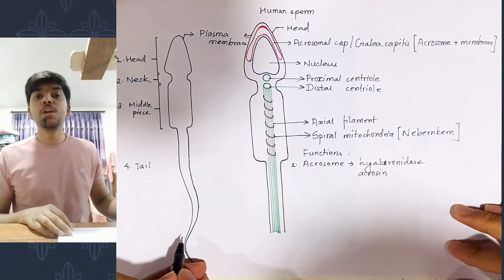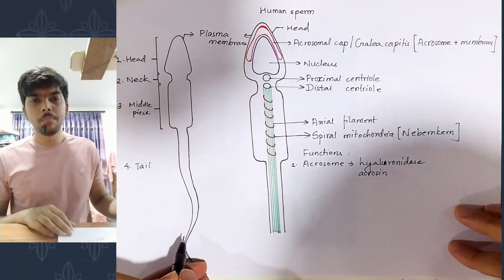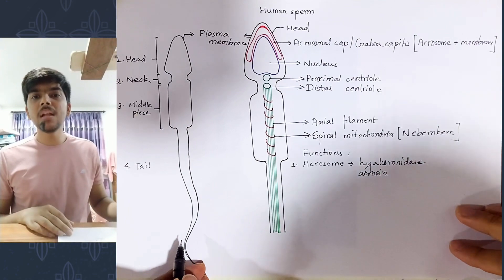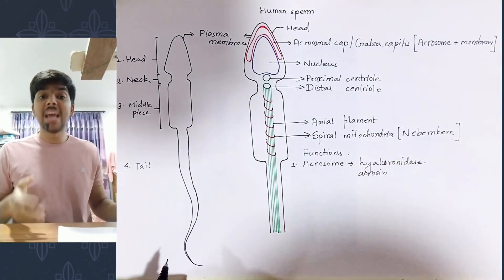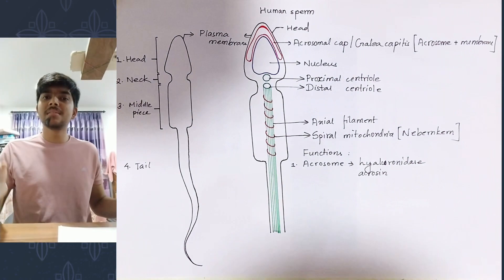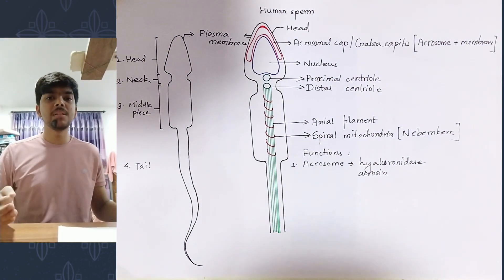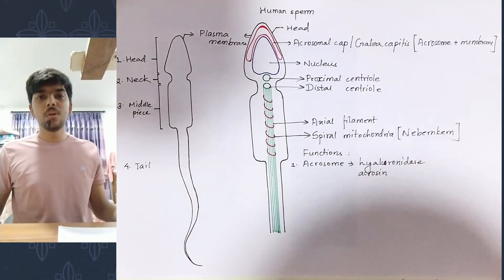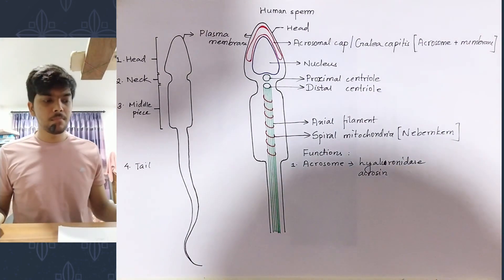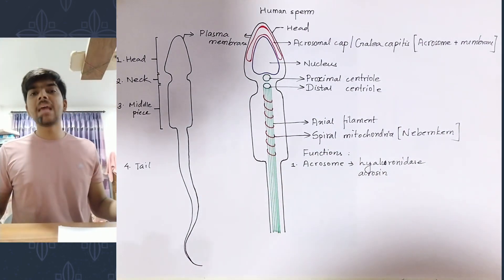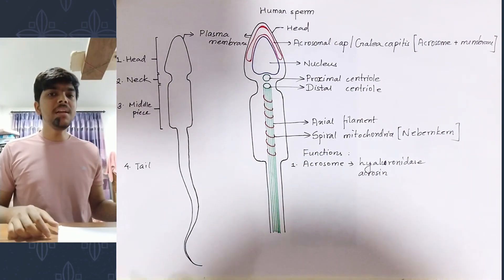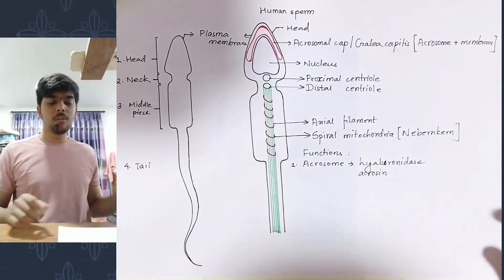This right here is a human sperm. A human sperm is a male gamete. Since it's a gamete, it's obviously haploid — it contains half the number of chromosomes present in a diploid cell, or only one out of the two sets of chromosomes. It's a male gamete which is actually motile, and the motility is present due to the presence of the tail.